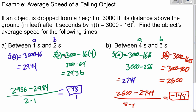That means between 1 and 2 seconds, it's falling 48 feet per second. And between 4 and 5 seconds, its average speed would be that it's falling at 144 feet per second.